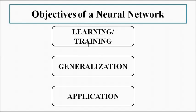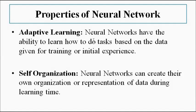These are the three main tasks or objectives of the neural network: first, to learn and train itself according to the data or information fed into it; next, generalization or organization of that data; and finally, application — the main task — to solve the problem using the data given to it. Now let's look at the properties or features of a neural network.